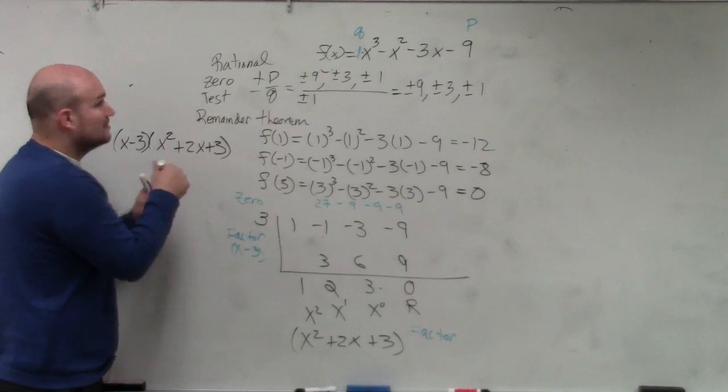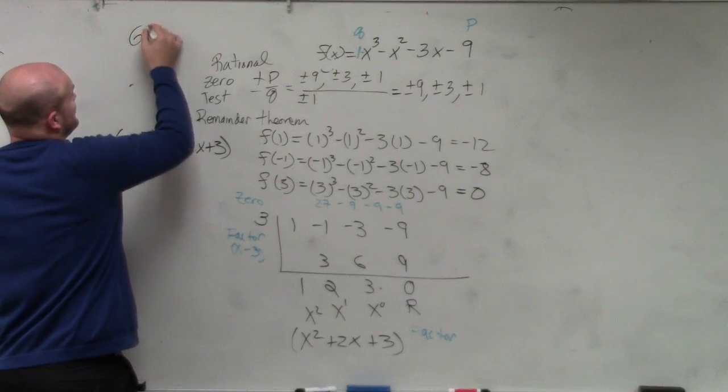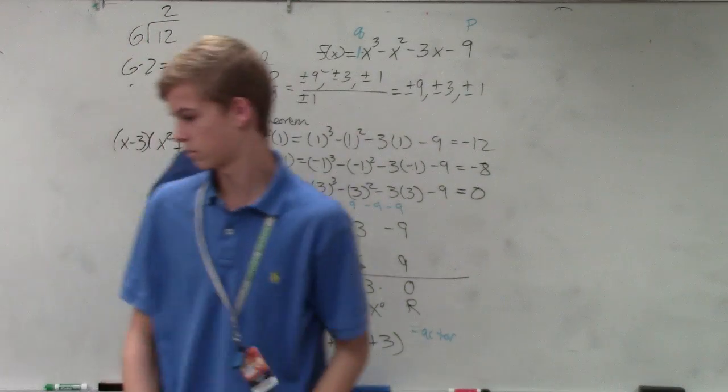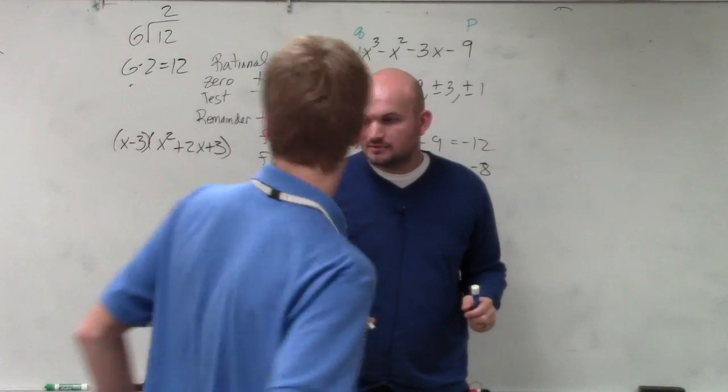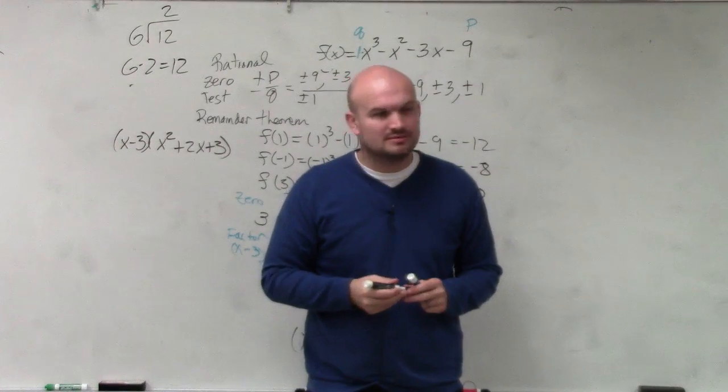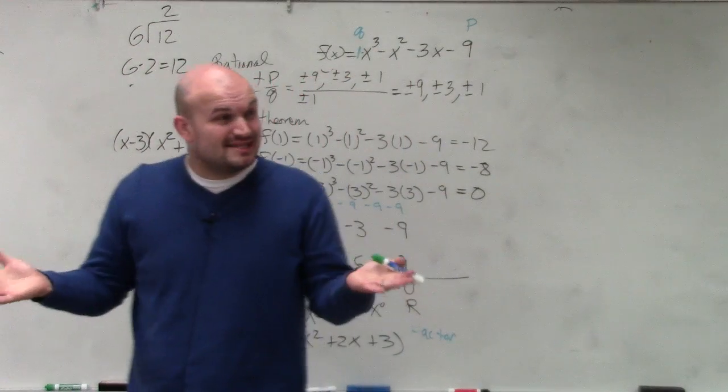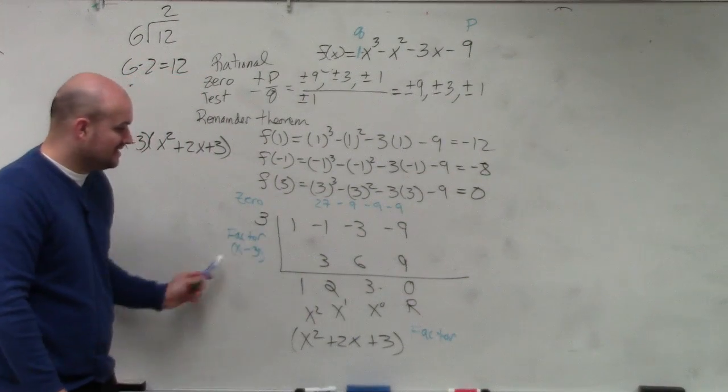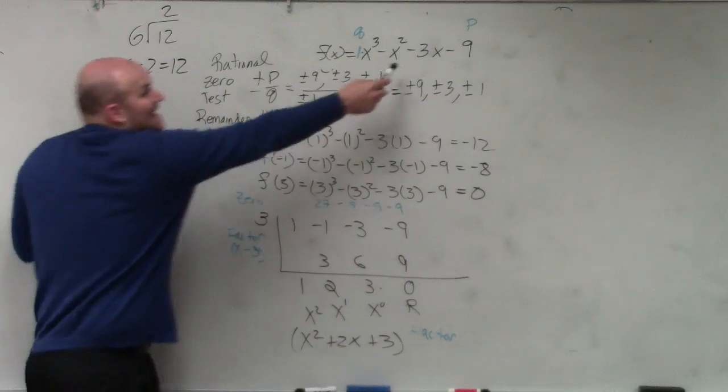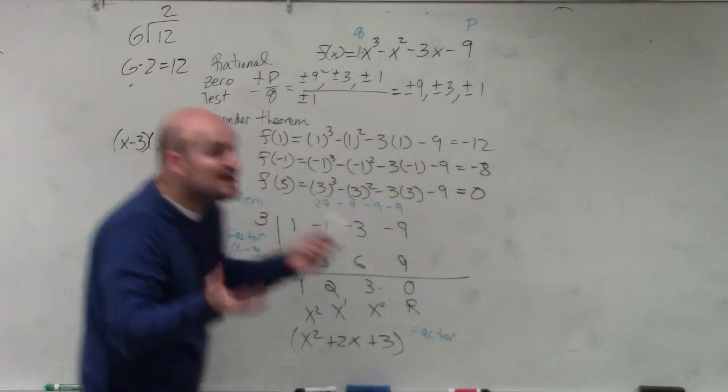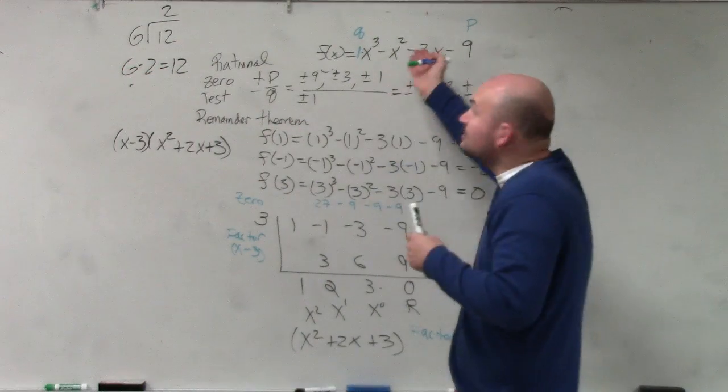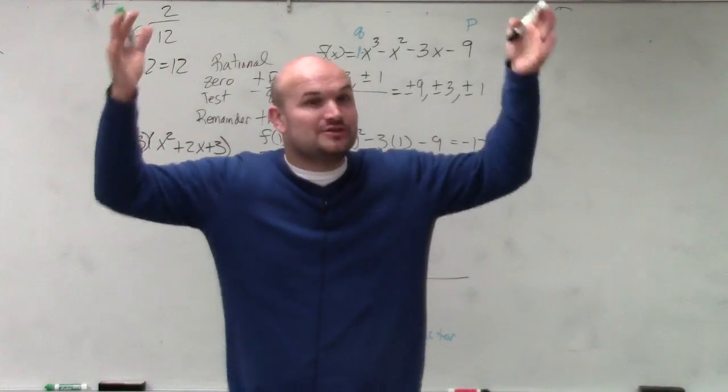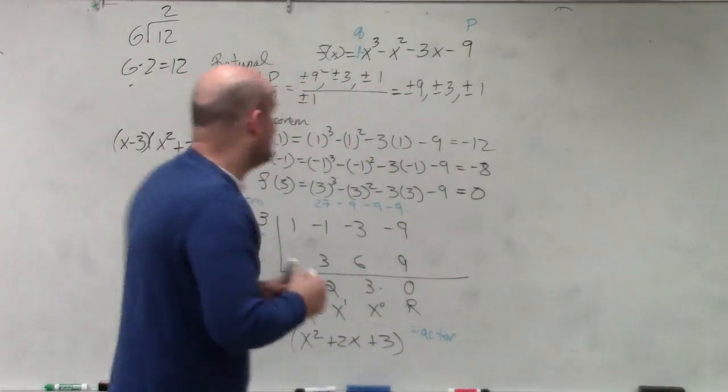Does everybody agree I can multiply my two factors? This times this. Multiply my two factors, that gives me my original polynomial. But I'm not trying to find my original polynomial. I already know what the original polynomial is. So I'm trying to find the zeros. So if you have something factored, you always set it equal to 0 to find the zeros.